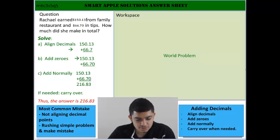So in our word problem today, it says Rachel earned $150.13 from her family restaurant and earned $66.70 in tips. How much did she make in total?